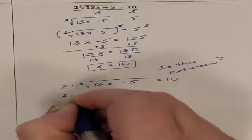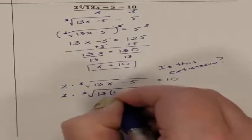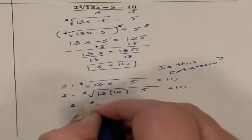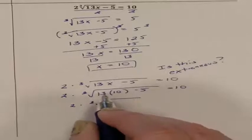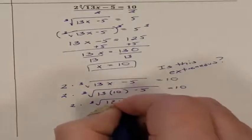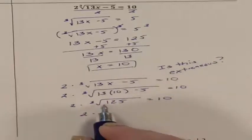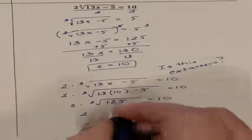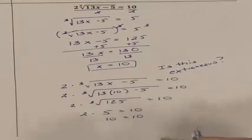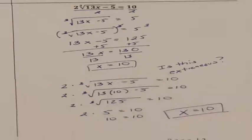2 times the third root of 13 times 10, so 2 times the third root of 13 times 10 is 130, minus 5 is 125. 2 times the third root of 125, the third root of 125 is 5. 2 times 5 is 10. 10 does equal 10, so I do know that x equals 10 is an actual answer.